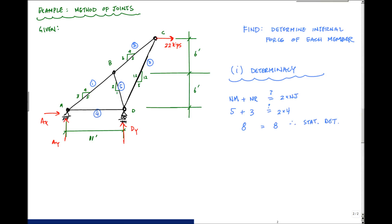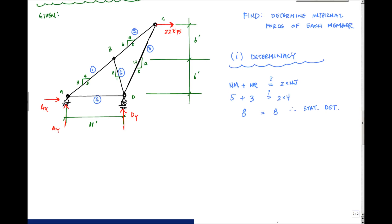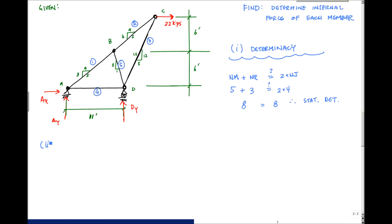So now we can solve this using method of joints. Let's start with method of joints and isolate a joint. A good candidate here for isolating the joint: at joint A I'd have 4 unknowns, at joint B I'd have 3 unknowns, at joint D I'd have 4 unknowns. Joint C obviously is a nice candidate because I have only 2 members framing into joint C and the load 22 kips. So let's isolate and draw joint C.